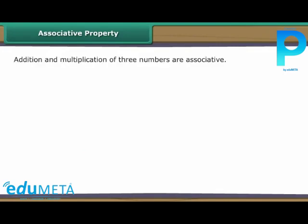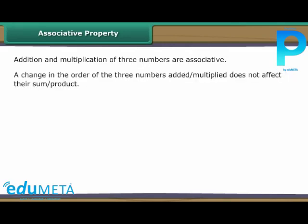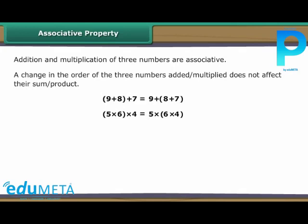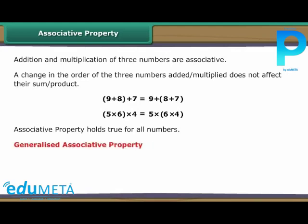Associative property: Addition and multiplication of three numbers are associative. A change in the grouping of three numbers added or multiplied does not affect their sum or product. For example, (9 plus 8) plus 7 is the same as 9 plus (8 plus 7); and (5 into 6) into 4 is the same as 5 into (6 into 4). The associative property holds true for all numbers and can be generalized with variables.